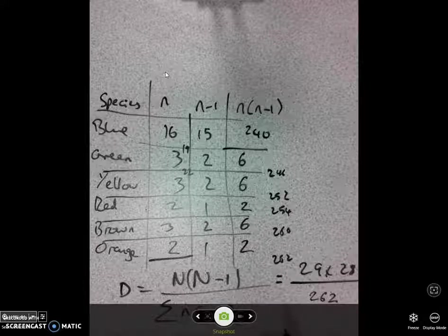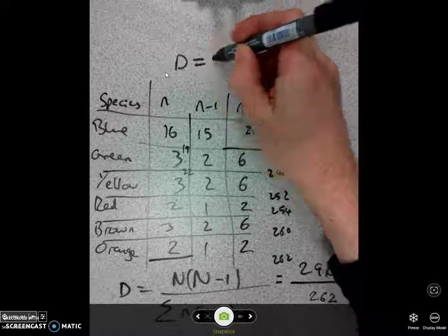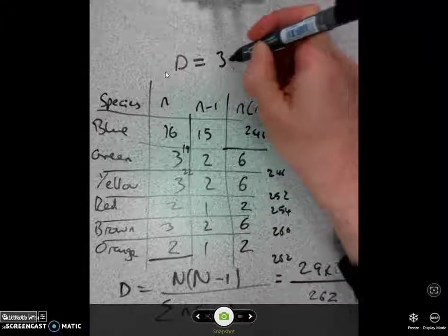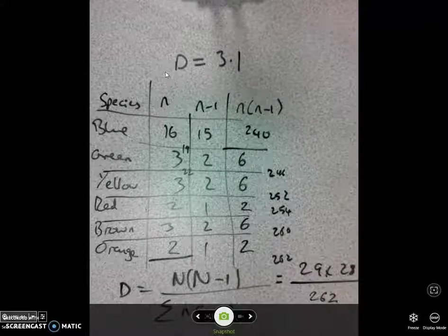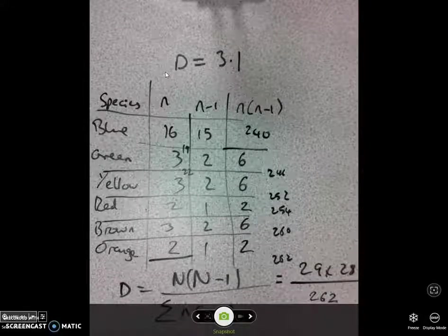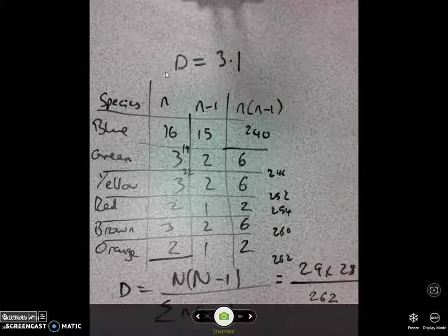I have a value of D of 3.1. That is the Simpson's diversity index for this habitat. Okay, watch it again if you didn't follow my working. Try some worked examples if you think you've got it.